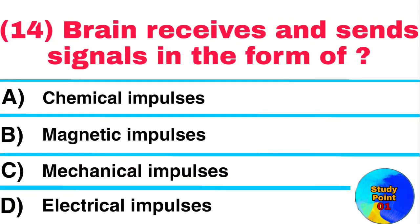Question: Brain receives and sends signals in the form of? Answer: Electrical impulses.